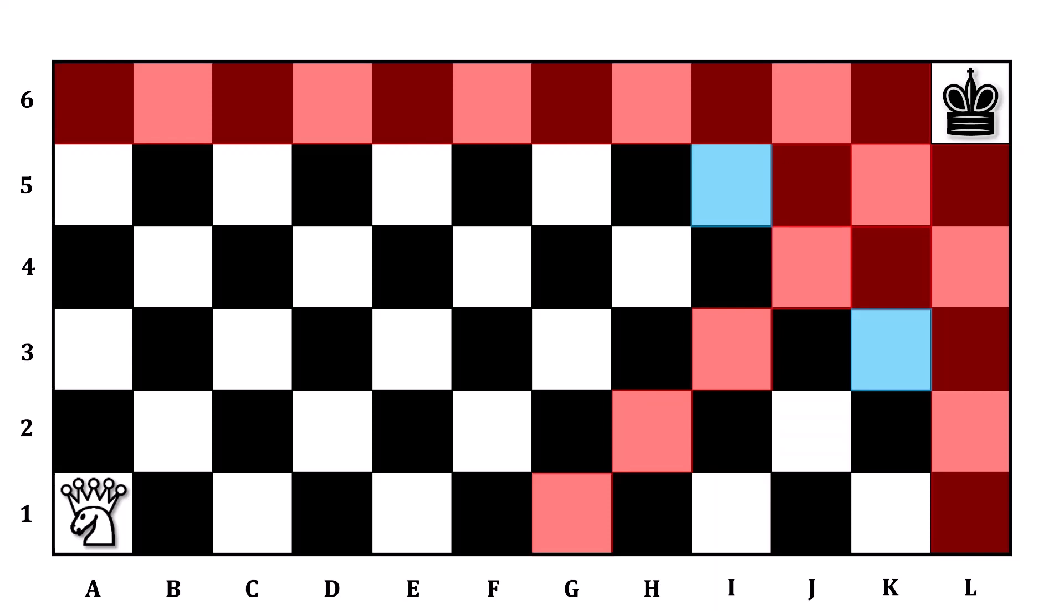To understand why, imagine that the Amazon were on I5. From here, she can go up one, but that's a red square. She can go anywhere to the right, but all three of those are red squares. She can go upright diagonally one space, but that's a red square. And finally, she can use her Knight move to jump to K6. But once more, that's a red square.